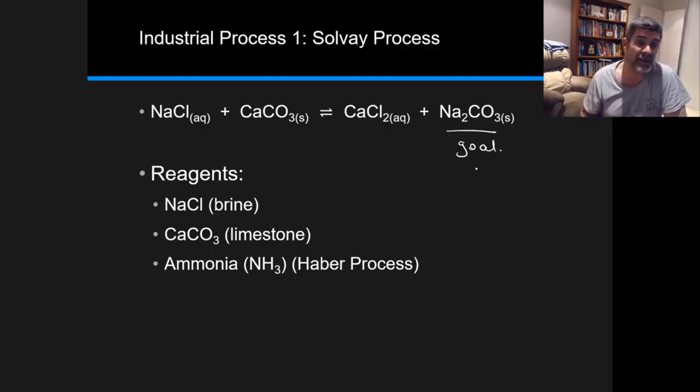Sodium carbonate is produced through a series of reactions that start with sodium chloride, which is usually in the form of brine—very salty water with a high salt concentration. The ocean can be a simple source of that. The other important reactant is calcium carbonate, and calcium carbonate's simplest source is limestone.